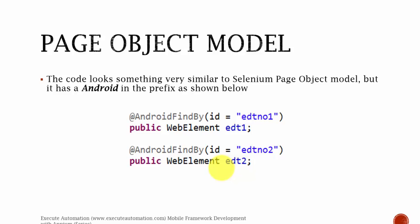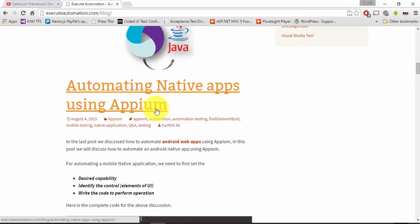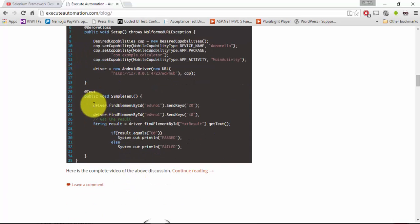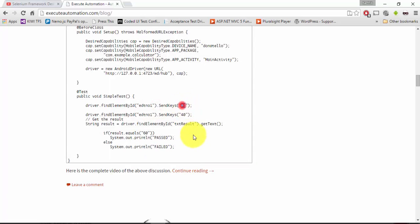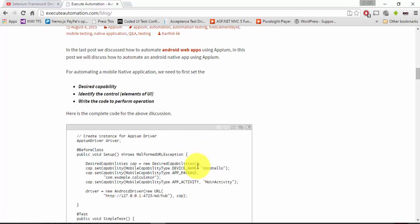The code looks very similar to Selenium page object models, but it has 'Android' in the prefix as shown. You can see there is an @AndroidFindBy annotation with id equal to edt_number1, and similarly @AndroidFindBy id equal to edt_number2. These are the two controls for our application. If you've already watched the Appium with Java video series, you'll be familiar with these two controls since we used them a lot while writing the Android native application using Appium.